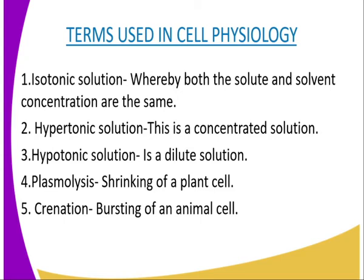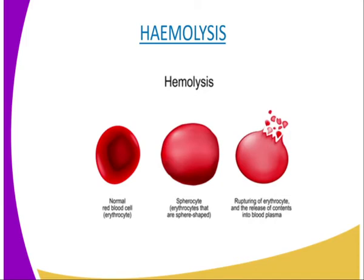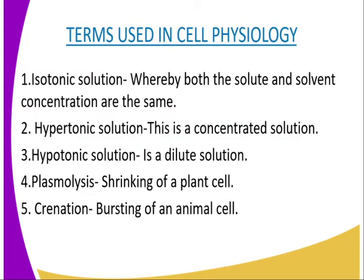What we are trying to say here is that the body fluid concentrations of living organisms must be at the same level, that is isotonic. This is because if it is a hypertonic solution, which is a highly concentrated solution, that hypertonic solution will withdraw water from the cell and it will shrink, a problem known as crenation.